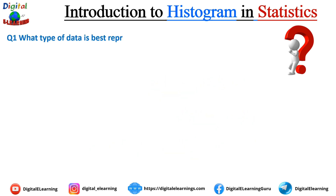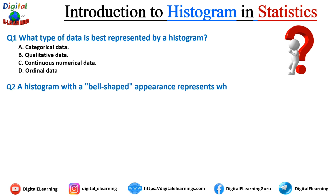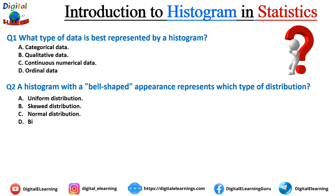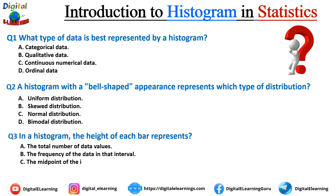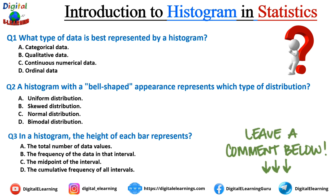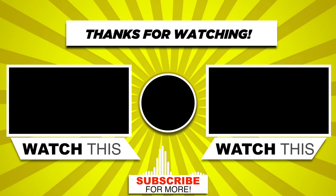Now it's quiz time. Read the questions and leave your answers in the comments below. Question 1: What type of data is best represented by a histogram? A) Categorical data, B) Qualitative data, C) Continuous numerical data, or D) Ordinal data. Question 2: A histogram with a bell-shaped appearance represents which type of distribution? A) Uniform, B) Skewed, C) Normal, or D) Bimodal. Question 3: In a histogram, the height of each bar represents what? A) The total number of data values, B) The frequency of data values in that interval, C) The midpoint of an interval, or D) The cumulative frequency of all intervals. Leave all your answers in the comments below.